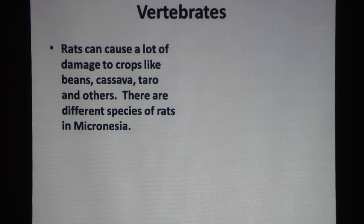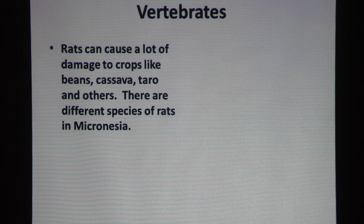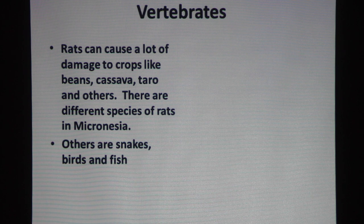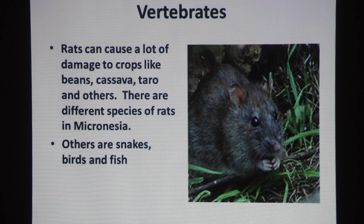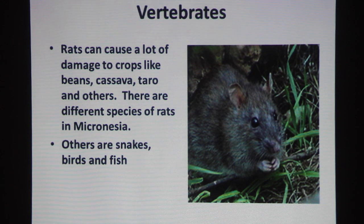Vertebrates: rats can cause a lot of damage to crops like bananas, cassava, taro, and others. There are different species of rats in Micronesia. In Pohnpei we have three different kinds of rat species. Other vertebrates include snakes, birds, and fish.